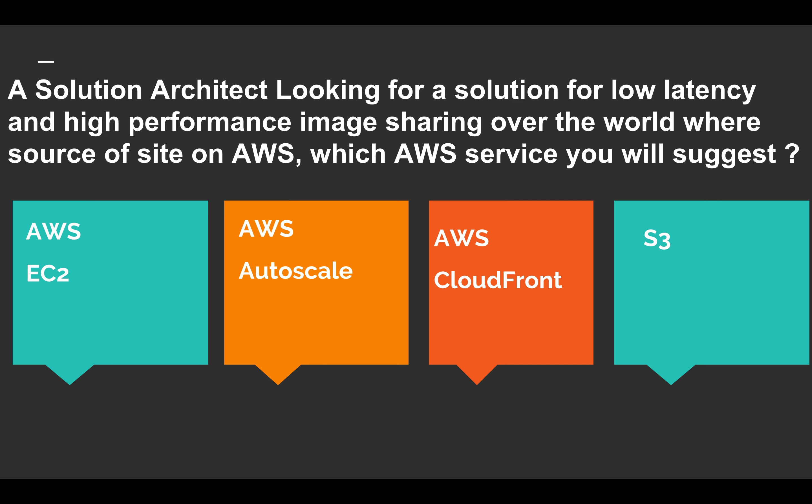Let's normalize the question. The solution architect is looking for a solution for low latency and high performance for image sharing — a website deployed on AWS. The requirement is high performance and low latency. The four options are: Option 1 — AWS EC2, Option 2 — AWS Auto Scale, Option 3 — AWS CloudFront, and Option 4 — S3.